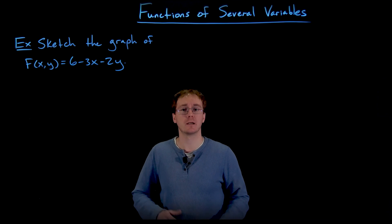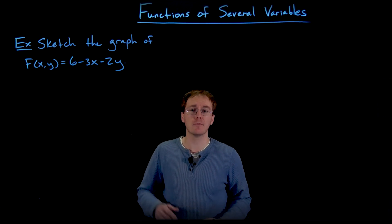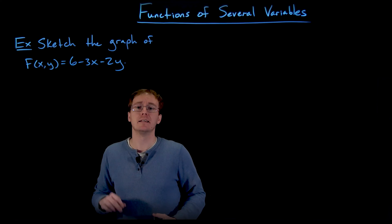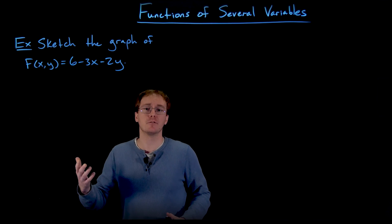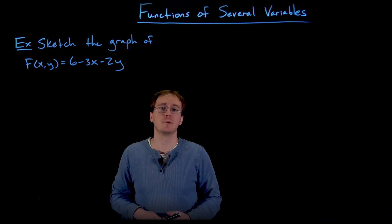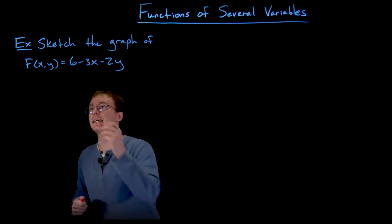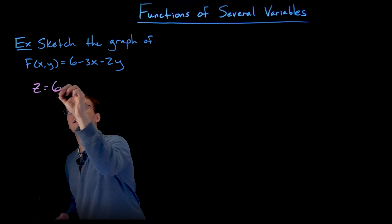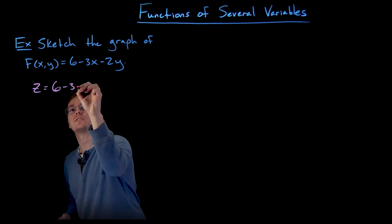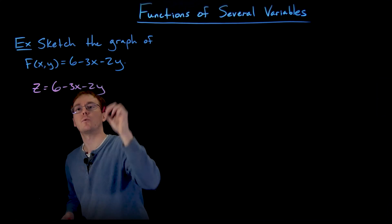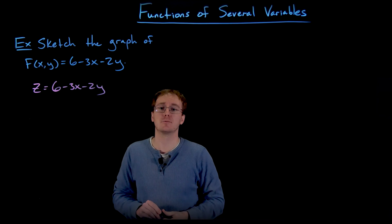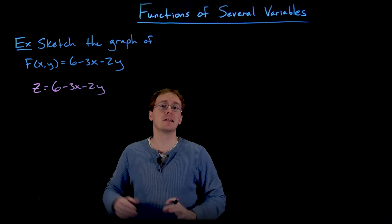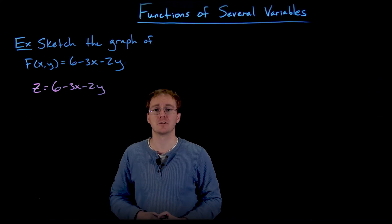One thing we might do for an example like this is remember that the notation f(x, y) is really a placeholder for our output value, which we might think of as z. So we can rewrite this equation as z equals 6 minus 3x minus 2y. With that, we can recognize that we're actually familiar with this type of function — this is representing a plane in three-dimensional space.